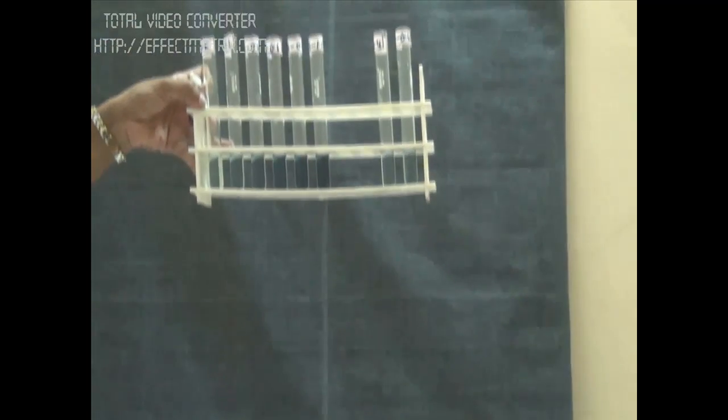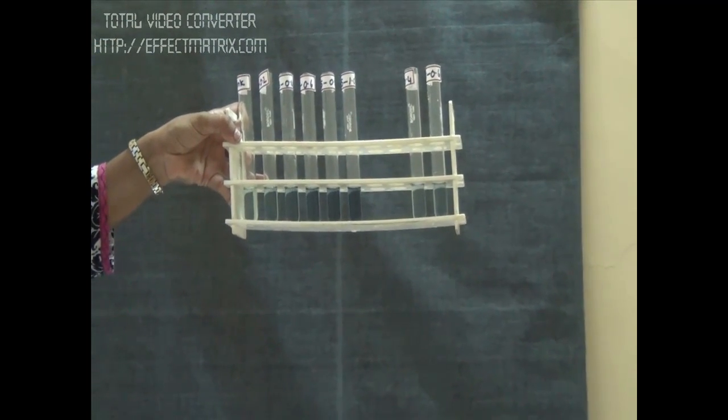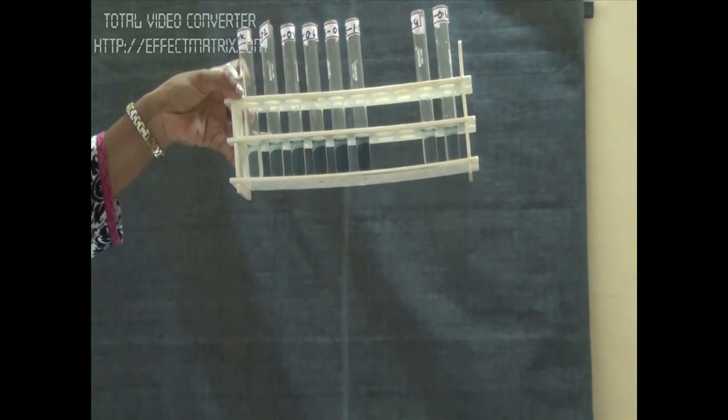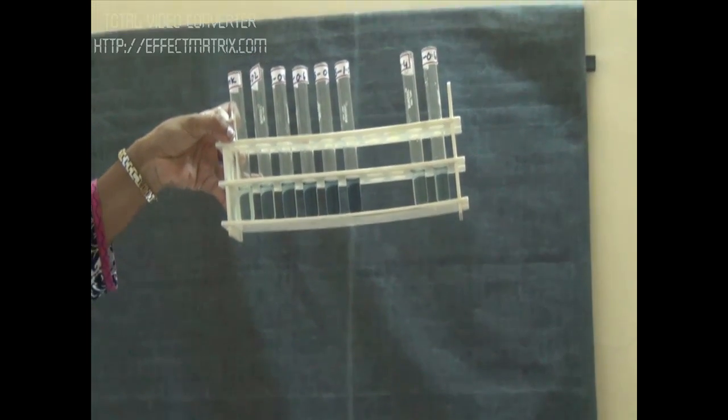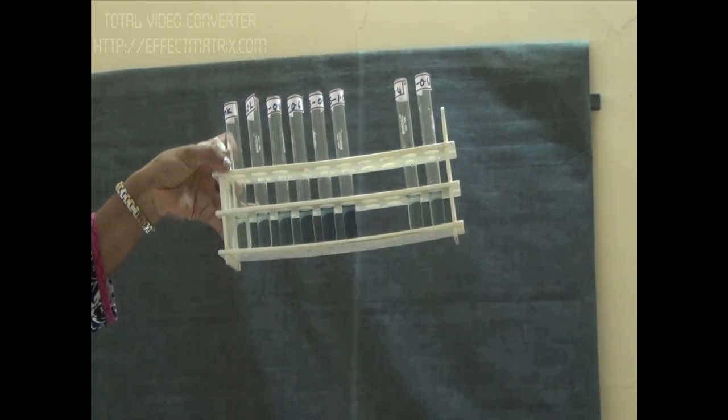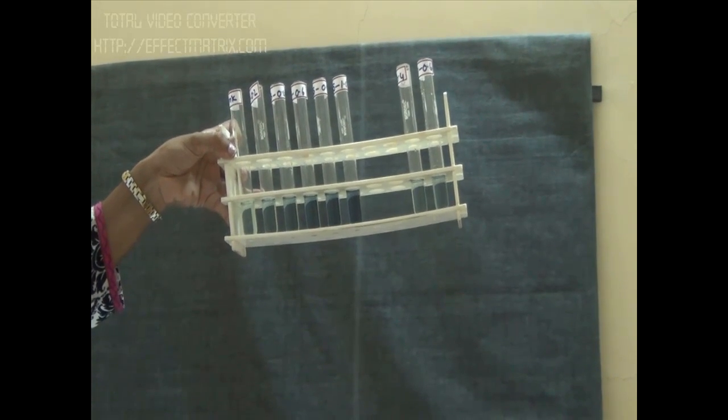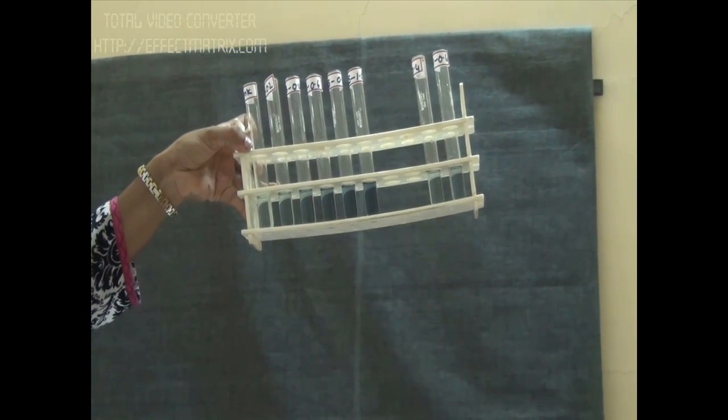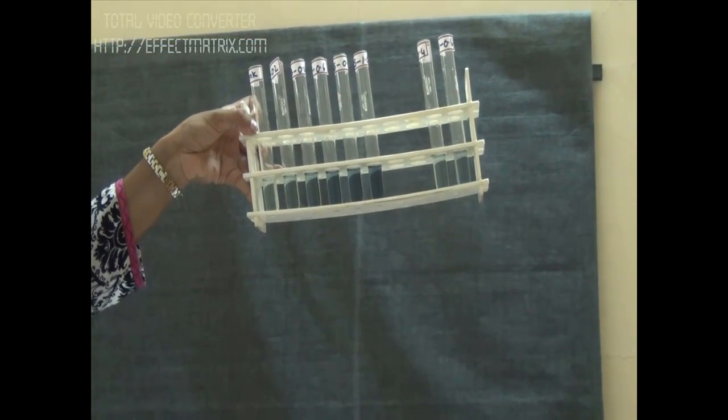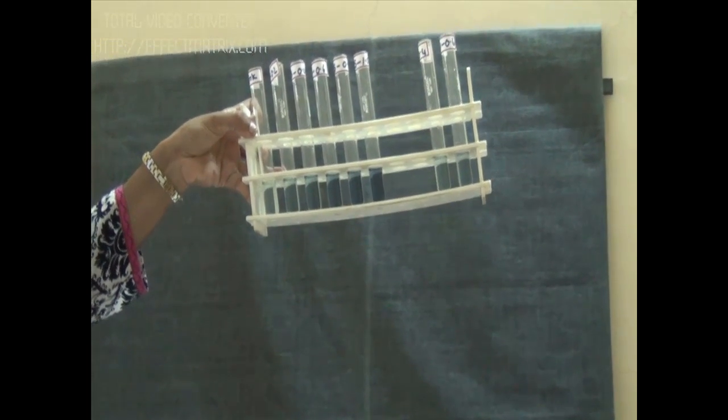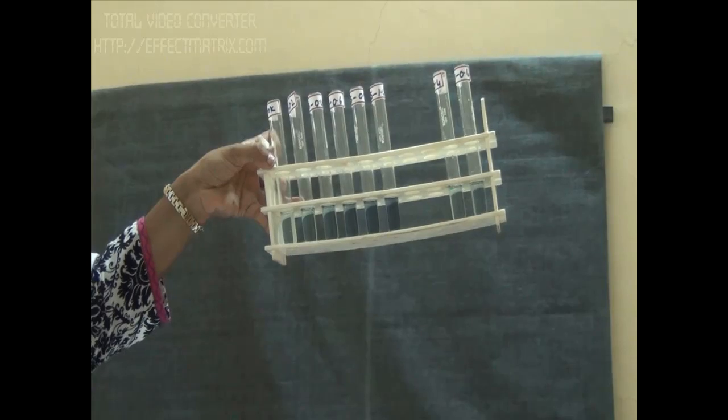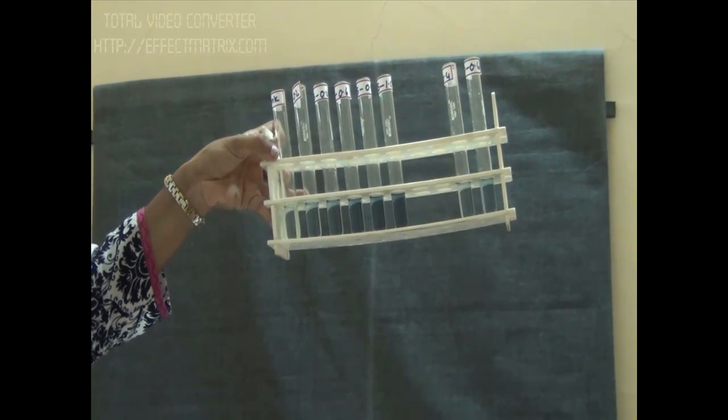Now we have removed the tubes from the water bath which was kept at 37 degrees. We can clearly see the increase in the intensity of the color, which indicates the reaction of the protein with alkaline CSFO4 and Folin's phenol reagent. We will now measure the concentration of protein in each tube by measuring absorbance at 660 nanometers.